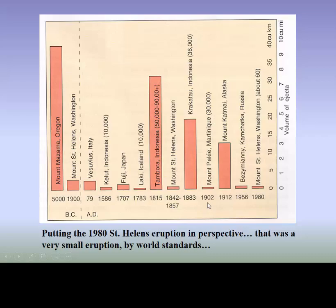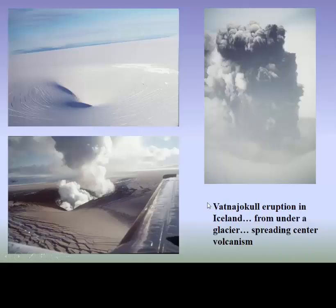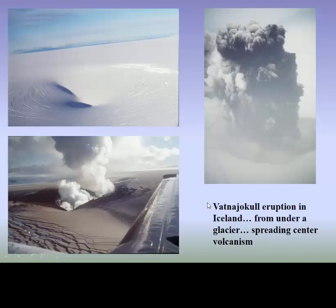Tambora caused what we call the year without a summer, and another larger one was Krakatoa in 1883. You can see how big some of these larger volcanoes are compared to Mount St. Helens. Pelée in Martinique killed 30,000 people, but it was on a relatively small island. And there was the one in Iceland in 2011, and then the effects of these — a lot to cover on volcanoes.